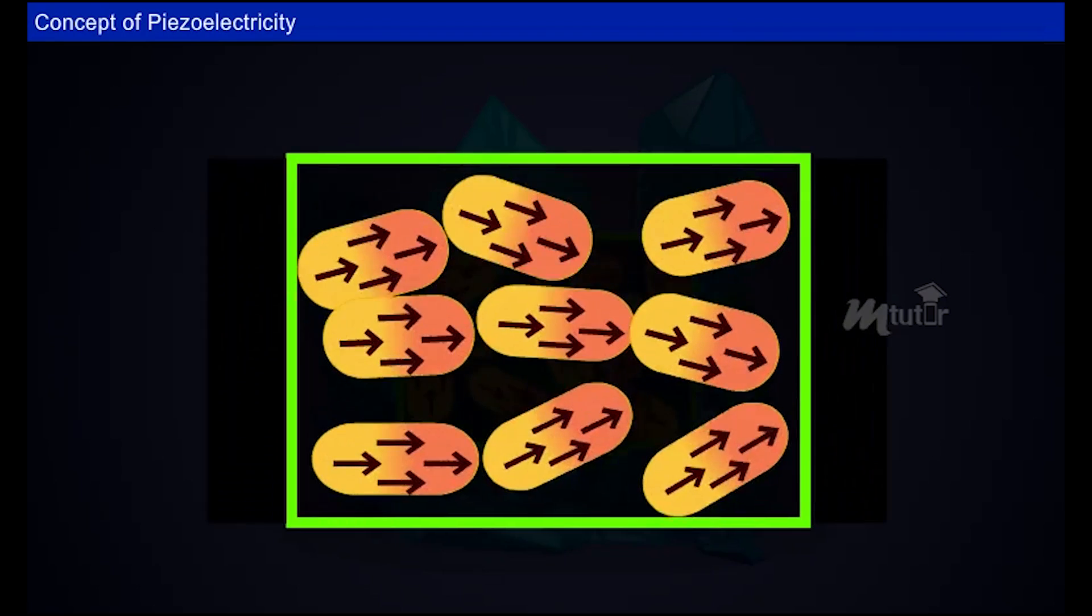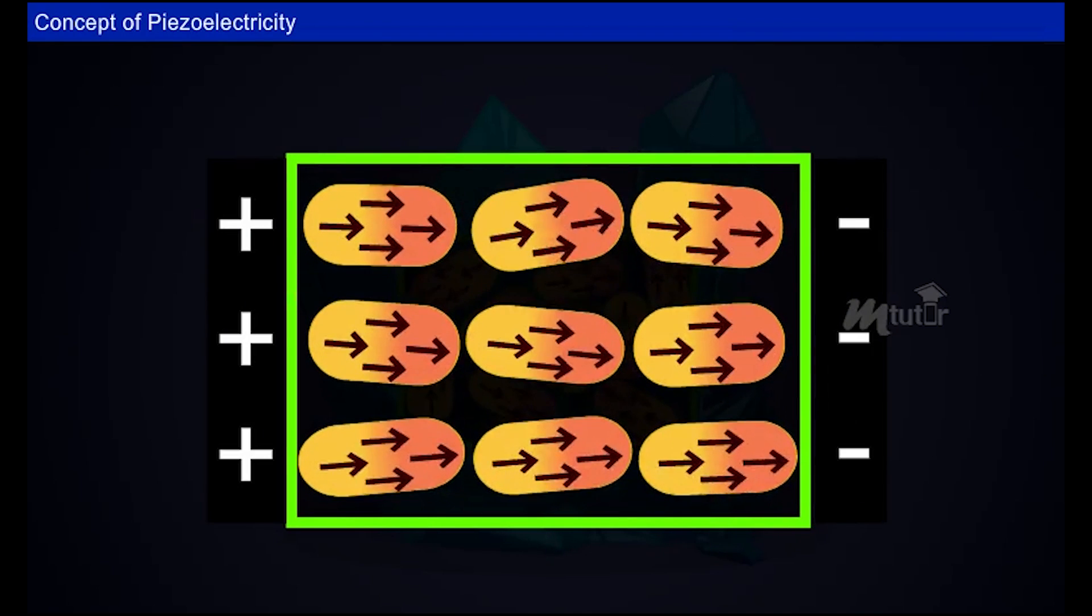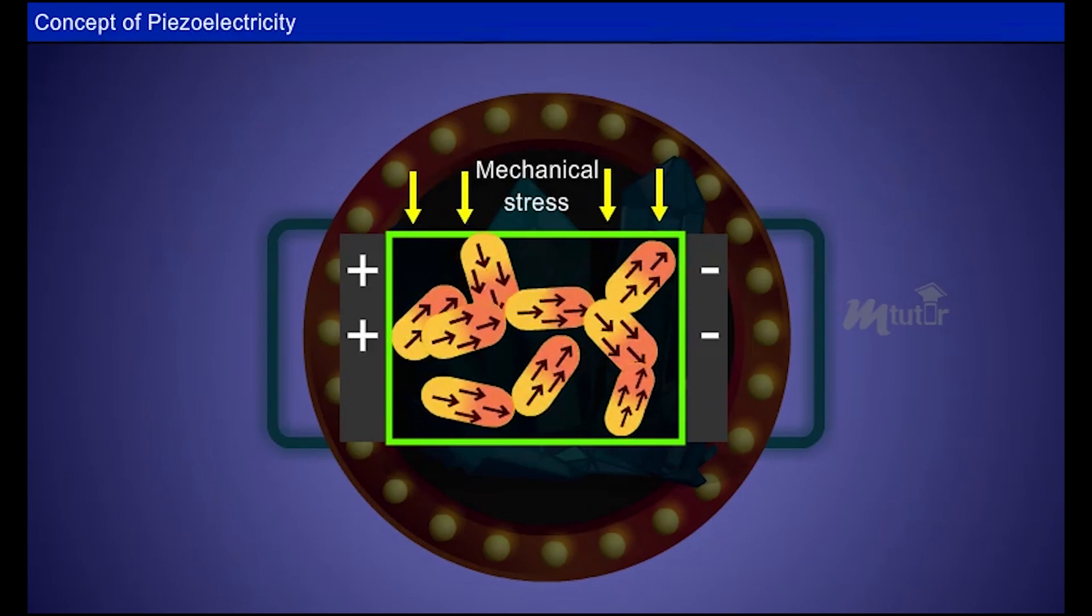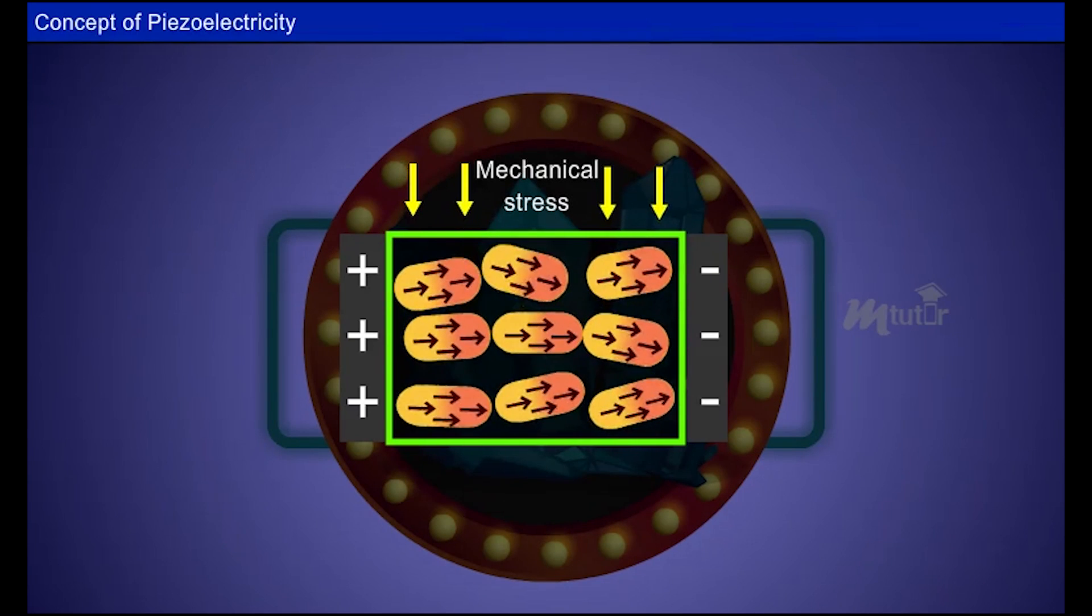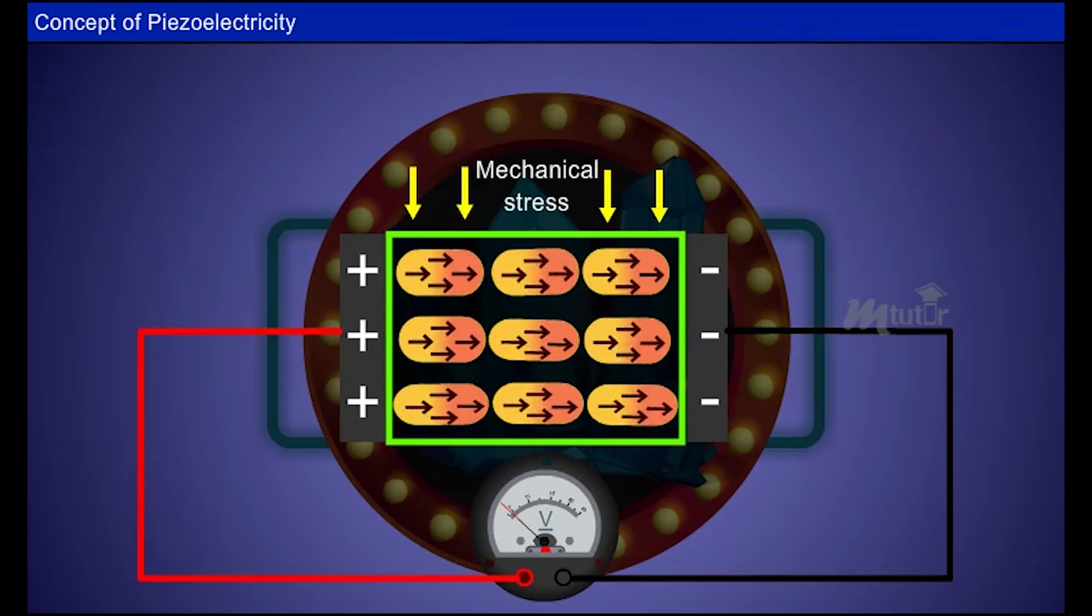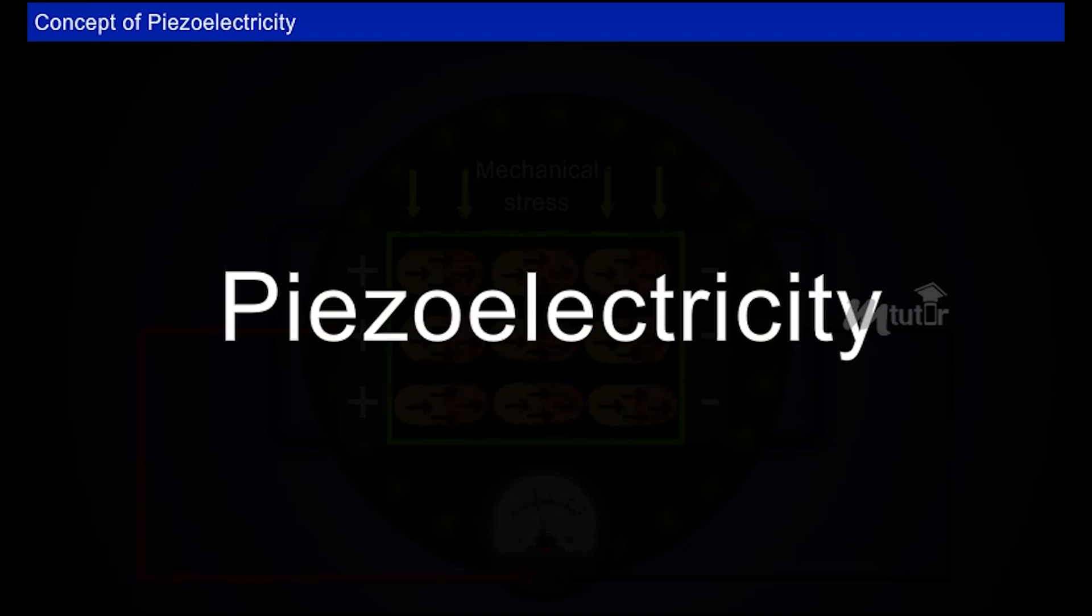When mechanical stress is applied to the crystal, the domains get disturbed and are aligned in a particular direction. This causes the distribution of charges on the crystal faces, which results in the generation of electric voltage across the crystal. This effect is known as piezoelectricity.